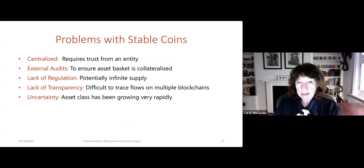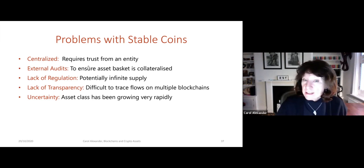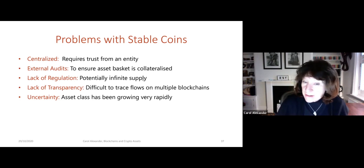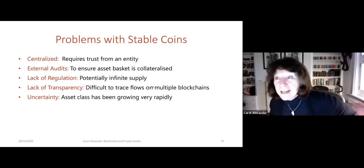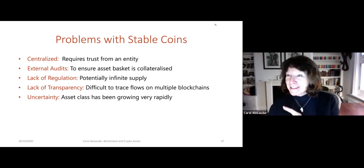The problems with stablecoins are: they are centralized, requiring the trust of an entity; they need external audits to ensure the asset-backed basket is properly collateralized; there is not enough regulation — Tether has reached $16 billion; there is a lack of transparency and difficulty tracing the flows; and the asset class has been growing too rapidly. And with that, the lecture ends.